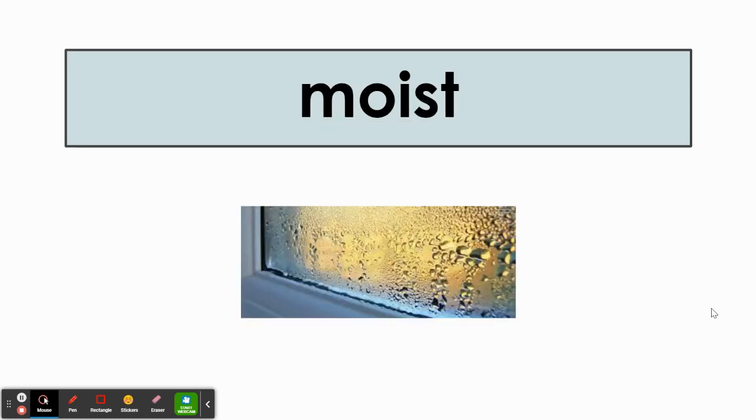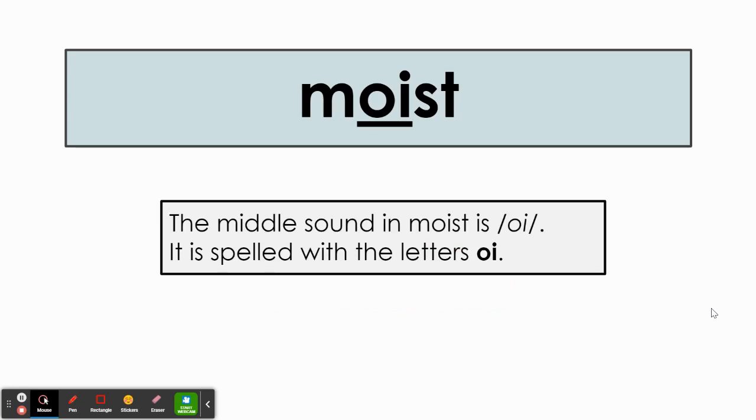This is the word moist. M-o-y-st. Moist. The middle sound in moist is o-y. It is spelled with the letters o-i. M-o-y-st. Moist.